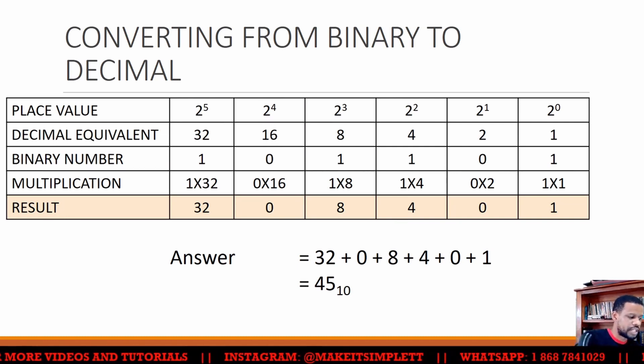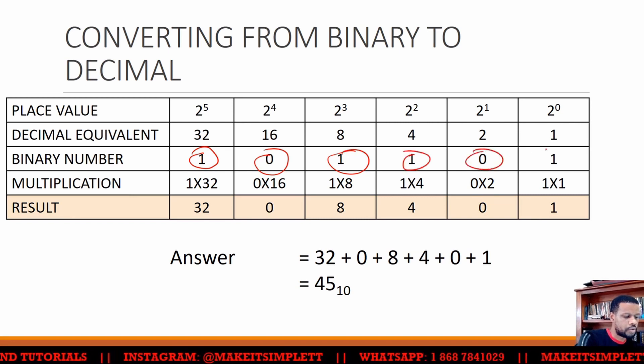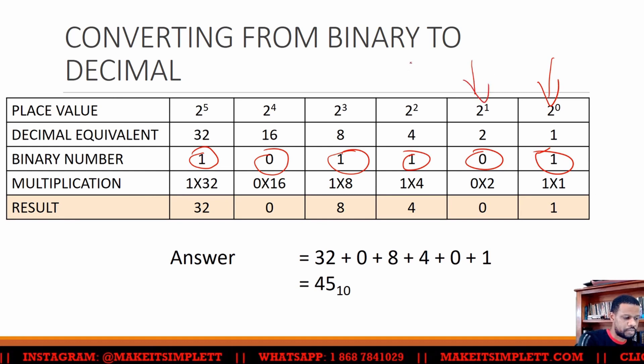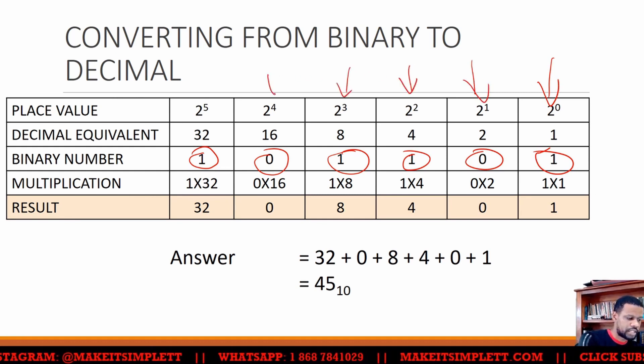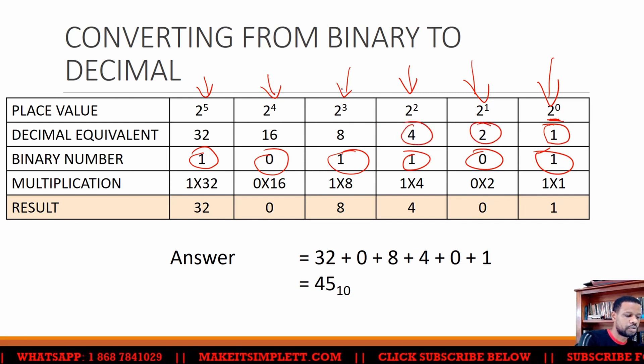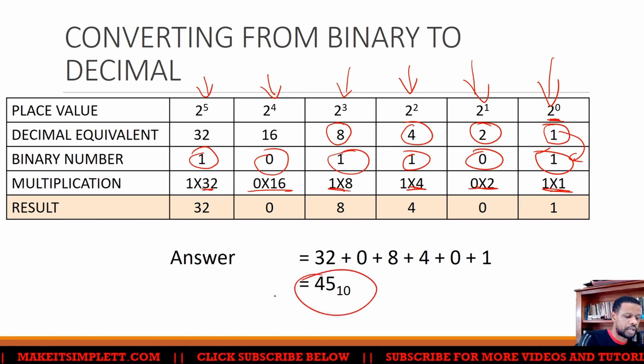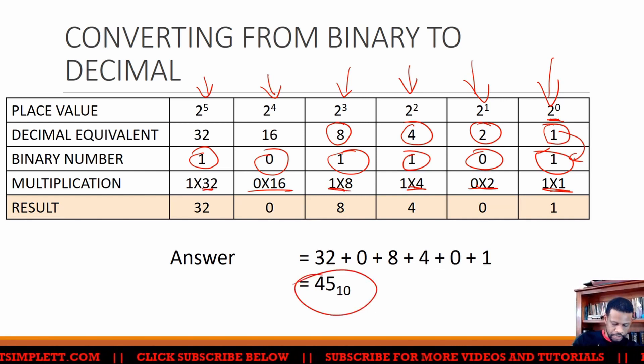When you're converting from binary to decimal, you have to take the number that you have, the 101101, and you have to multiply by its decimal equivalent. So the decimal equivalent will be based on the base that it's at. This is base zero, so two to the power zero is one, two to the power one is two, two to the power two is four, two to the power three is eight, and then you multiply these, which is what's going on here. And then you add up all of them and you'll get the number. That's revision.